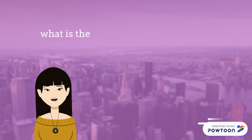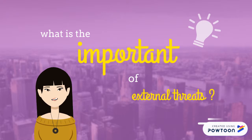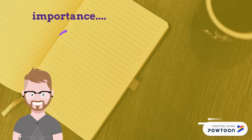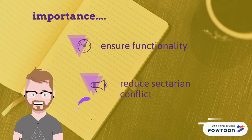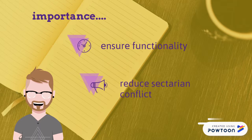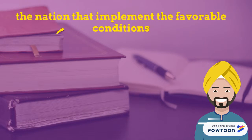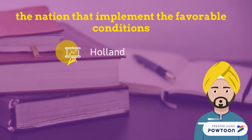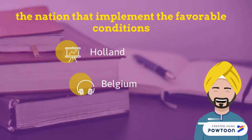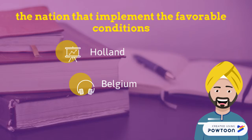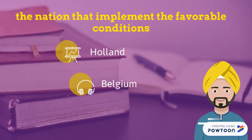What is the importance of external threats? External threats are very important to ensure the functionality of a constitutional democracy and to reduce sectarian conflicts, as this problem can lead to something that is not supposed to happen. Consociational democracy among countries such as Holland and Belgium suggests that external threats in these countries threatened the ties among the subcultures at mass level and the ties between leaders and followers within the subcultures.